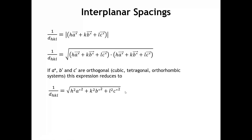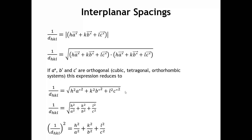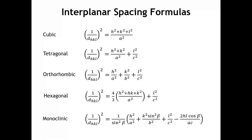For an orthogonal crystal system, the length of A-star is just one over A, and the length of B-star is just one over B. We can rewrite with the real space lattice vectors, and squaring both sides to remove the square root gives us an equation to calculate the distance between any set of HKL planes in terms of the Miller indices H, K, L and the real space lattice constants. This general form works for cubic, tetragonal, or orthorhombic crystal systems, and we can simplify it further for cubic and tetragonal.